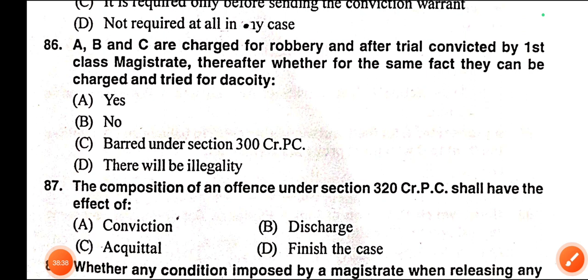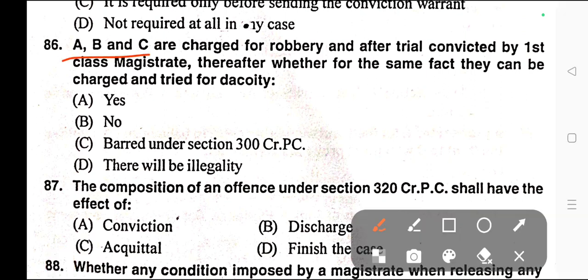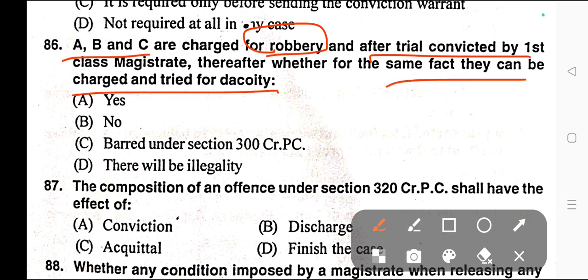Question number eighty-six: A, B, and C are charged for robbery and after the trial convicted by the First Class Magistrate. Thereafter, whether for the same facts they can be charged and tried for dacoity. Options: A) Yes, B) No, C) Barred under Section 300 CrPC, D) There will be illegality. Correct answer is option A — Yes.